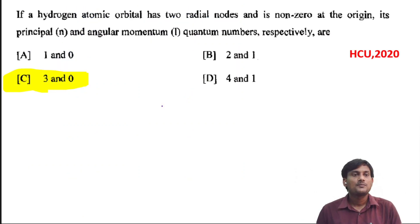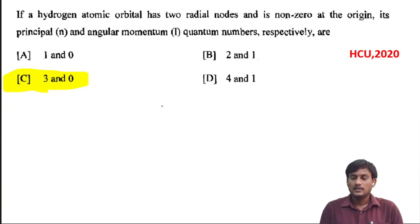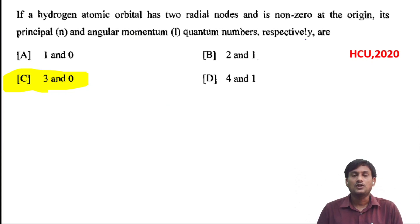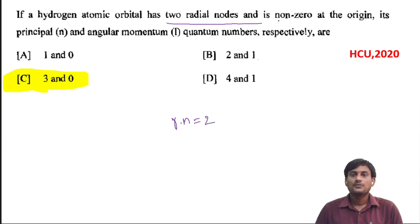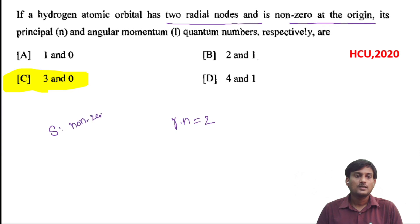The first question: if a hydrogen atomic orbital has two radial nodes and is non-zero at the origin, its principal and angular momentum quantum numbers respectively are. Here, it has two radial nodes — radial nodes equal to 2 — and also non-zero at the origin. The wave function for s orbitals is non-zero at origin.